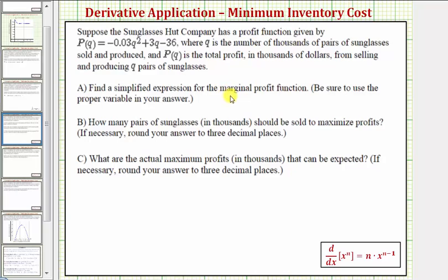Part A, find the marginal profit function, which would be the first derivative of our profit function P of Q. Part B, how many pairs of sunglasses in thousands should be sold to maximize profits? And we're asked to round to three decimal places. And finally Part C, what are the actual maximum profits in thousands that can be expected?